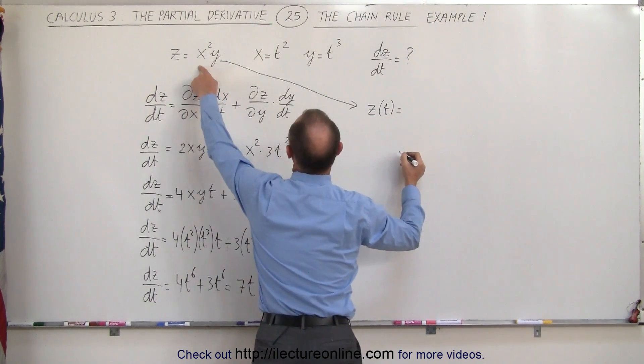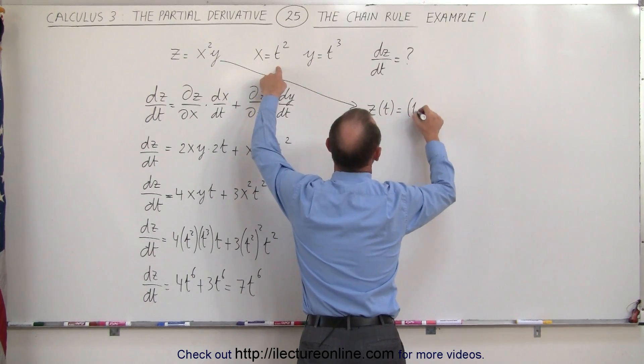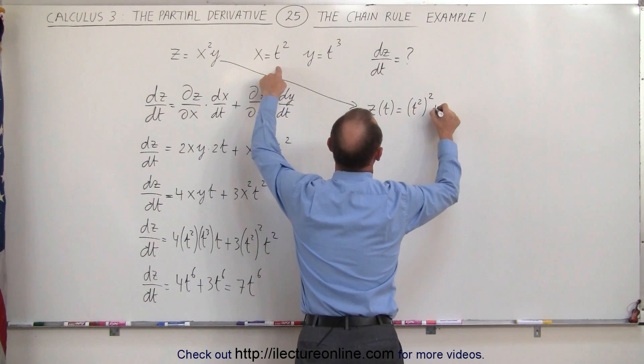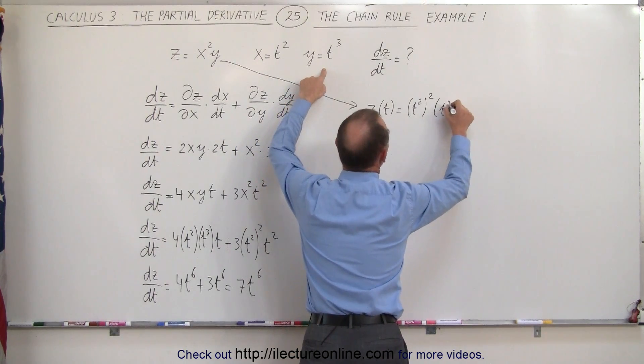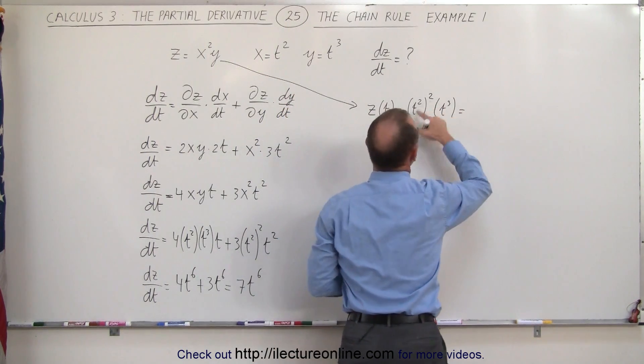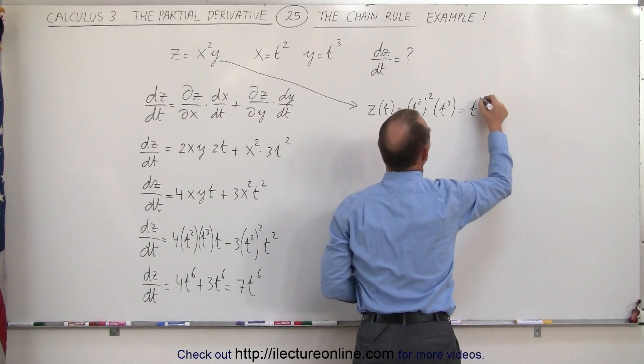And this is equal to instead of x squared we write t squared quantity squared times, instead of y, y we're going to write t cubed, which is equal to t to the 4 times t cubed or t to the seventh.